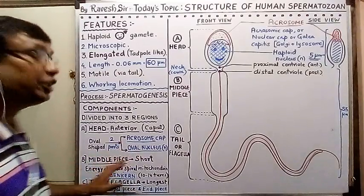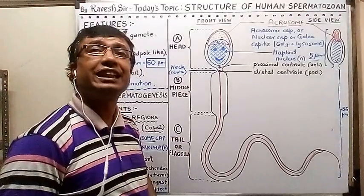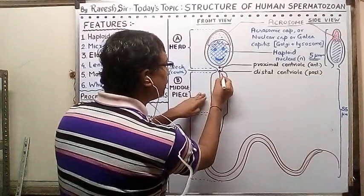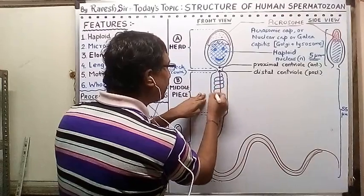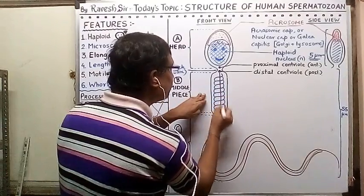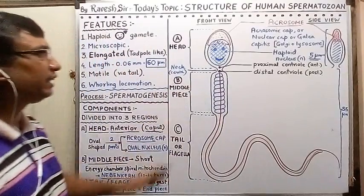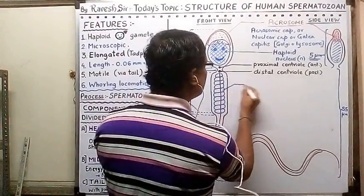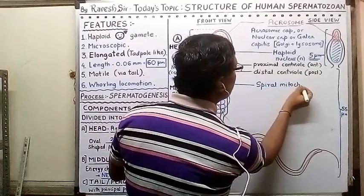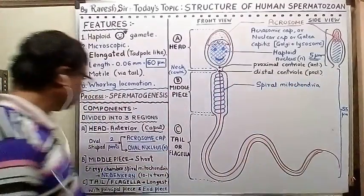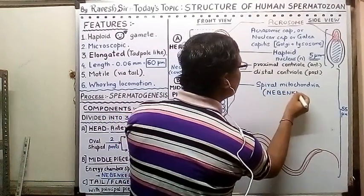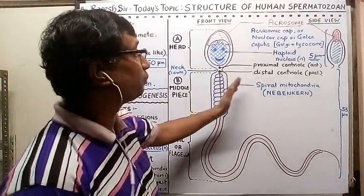The middle piece is made of mitochondria arranged in a spiral manner — about 10 to 14 spirals. This spiral mitochondrial arrangement is what gives the middle piece its energy-producing role, providing energy for the whirling movement of the sperm.